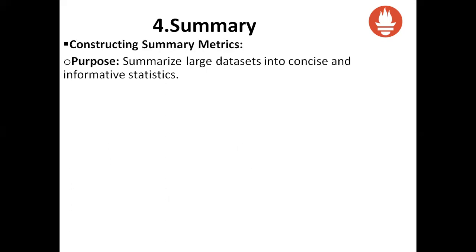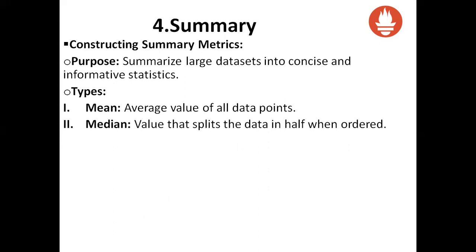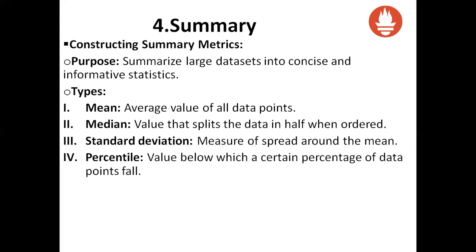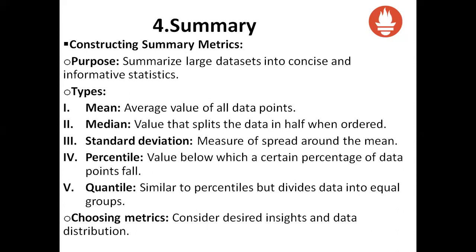Constructing summary metrics: the purpose is to summarize large datasets into concise and informative statistics. Types include: mean — the average value of all data points; median — the value that splits the data in half; standard deviation — measure of spread around the mean; percentile — value below which a certain percentage of data points fall; and quantile — similar to percentiles but divides data into equal groups. If you want to calculate mean, median, standard deviation, percentile, or quantile, use the summary metric.